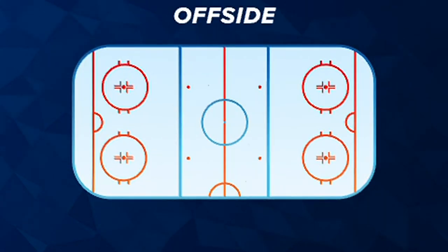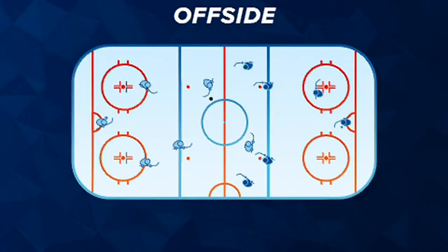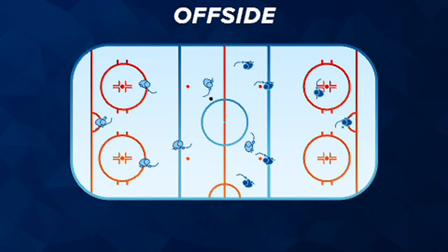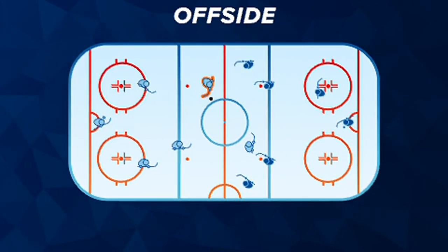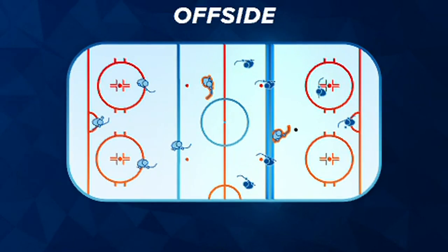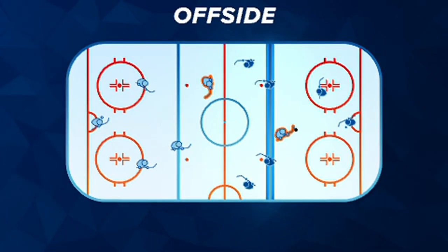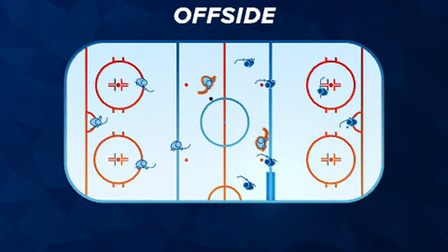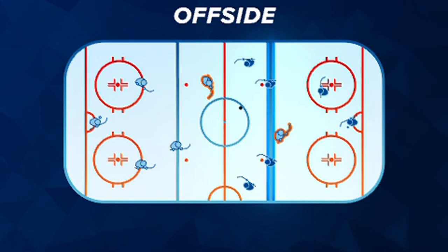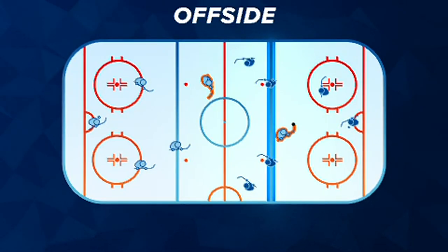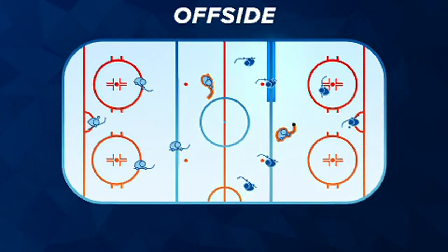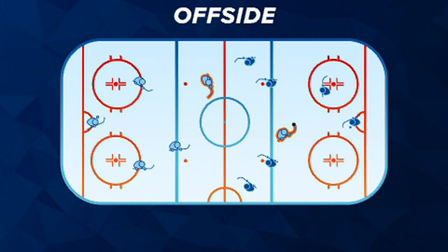Offside: this is one of the most confusing rules for non-hockey fans. Basically, it means that if team A has possession, the puck must cross the blue line into team B's zone before the attacking players do. If a player from team A enters the zone before the puck, then team A is offside. There are other nuances to offside, but that is the simplest definition.